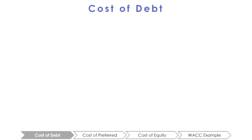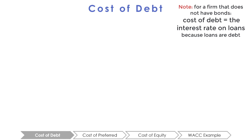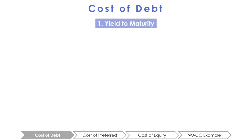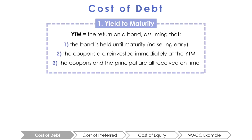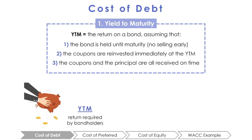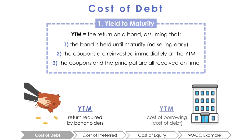First is the cost of debt. There are two ways of estimating it. One is using the yield to maturity approach, and the other is using the debt rating approach. Recall that the yield to maturity is the measure of the return on a bond, assuming that it is held until maturity. This tells us the return that bondholders require, which is the same as the cost to the firm. An effective way of estimating the cost of debt is to look at the YTM of the bonds that the company issues.